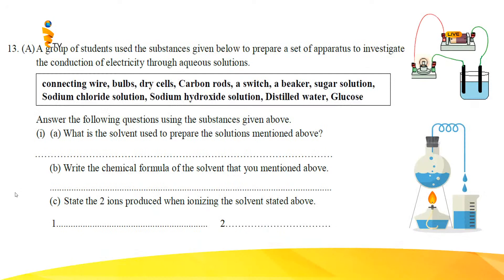What is our first question? What is the solvent used to prepare the solutions mentioned above? The answer is distilled water. The second question: what is the chemical formula of the solvent mentioned above? The solvent is distilled water, which is simply water. Water is made up of two hydrogen atoms and one oxygen atom, joined by covalent bonds. The chemical formula of water is H₂O.